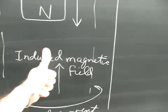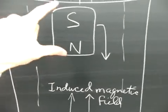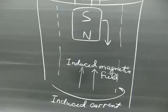That induced current creates an induced magnetic field, which opposes the motion of the magnet. Consequently, the magnet slows down.